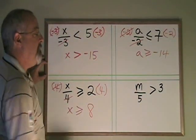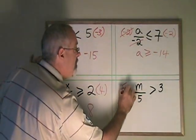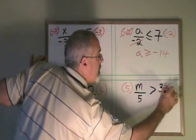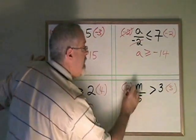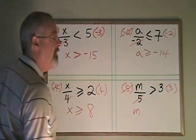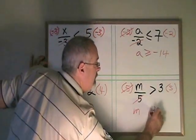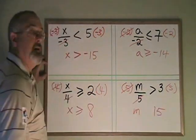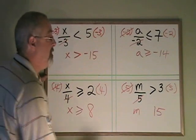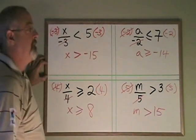Here, my m is being divided by a 5. So I multiply both sides by 5. These cancel. m is isolated. 3 times 5 is 15. Because I multiplied both sides by a positive number, I keep the symbol the way it already was.